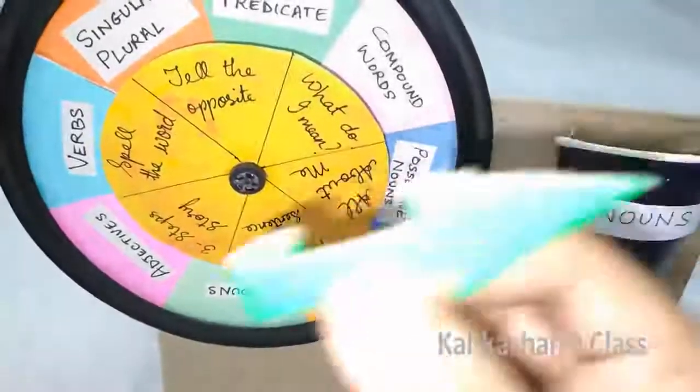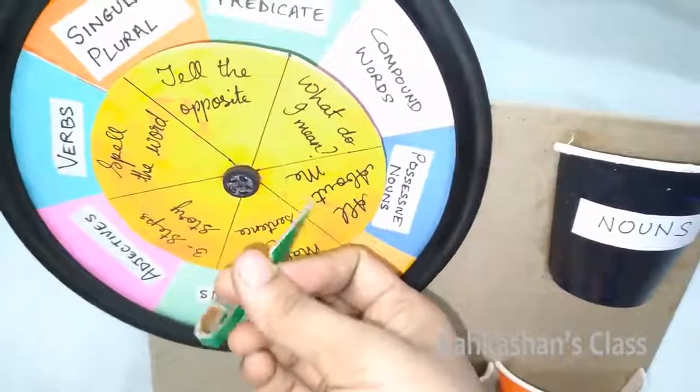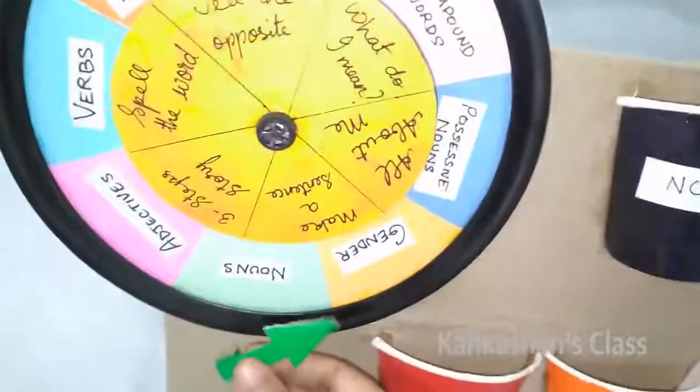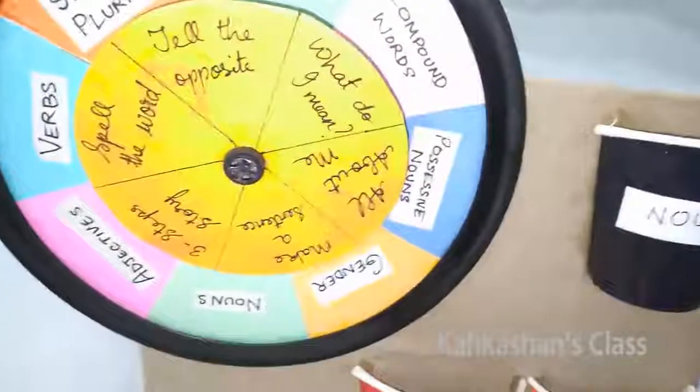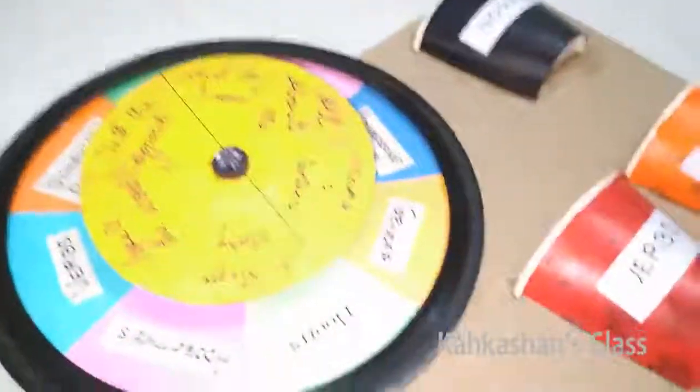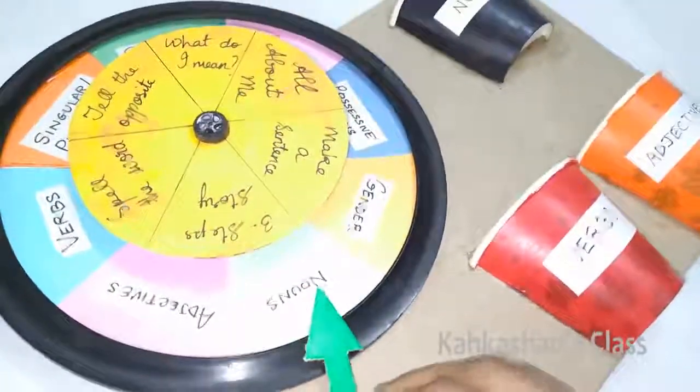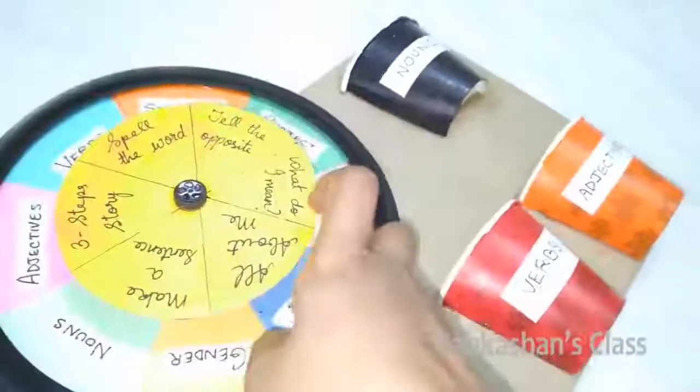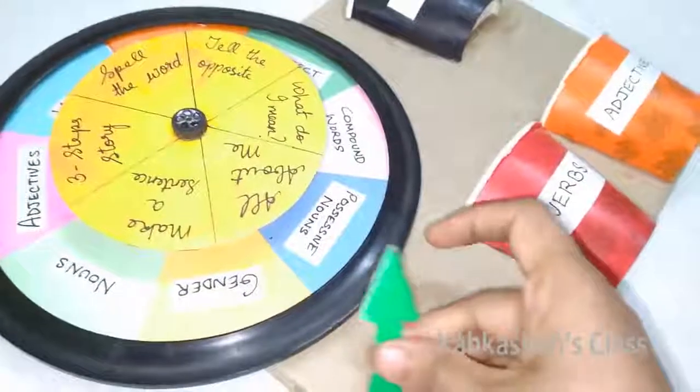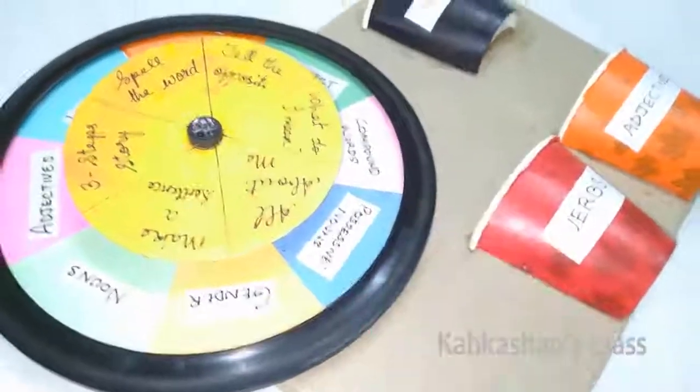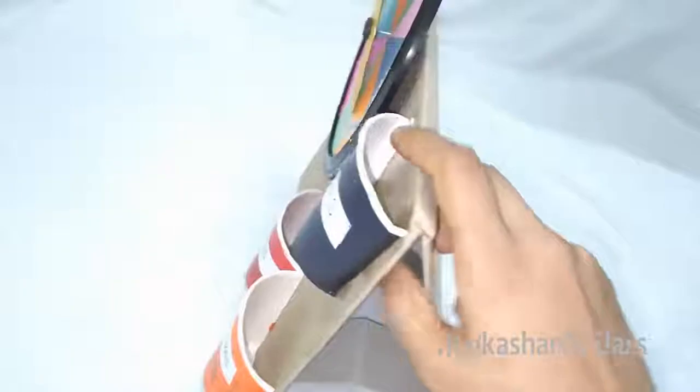Cut out an arrow shape for the pointer or the marker. Stick it with glue. When you are rotating the wheel, the marker can point it out. Last, you have to put the flaps for the support.